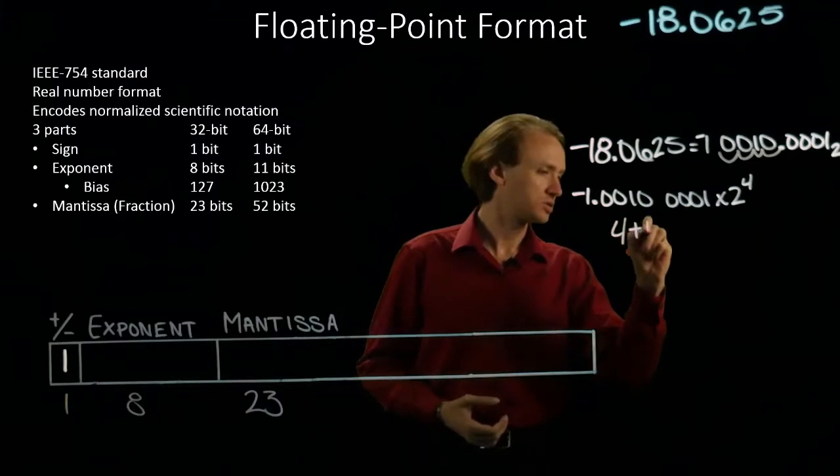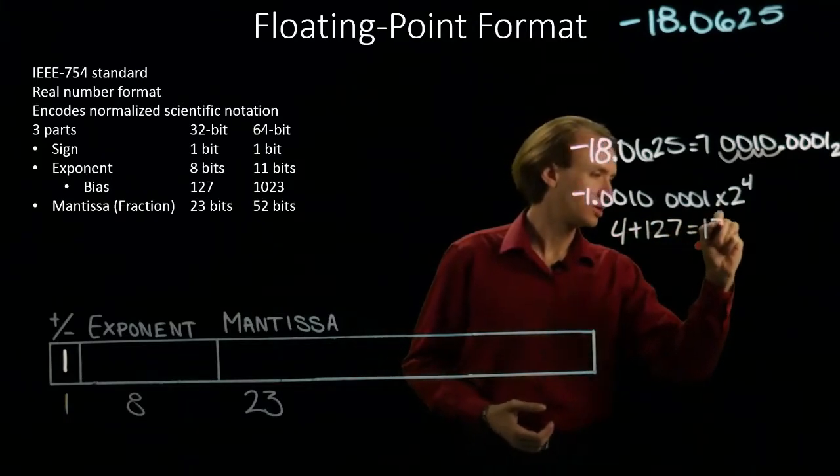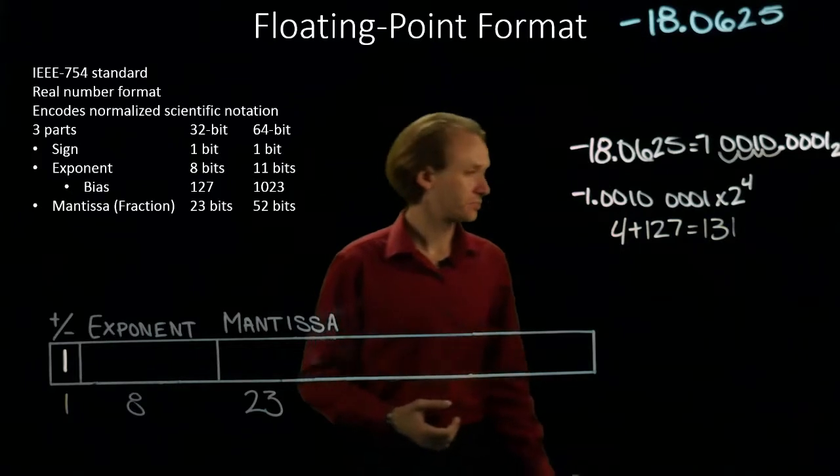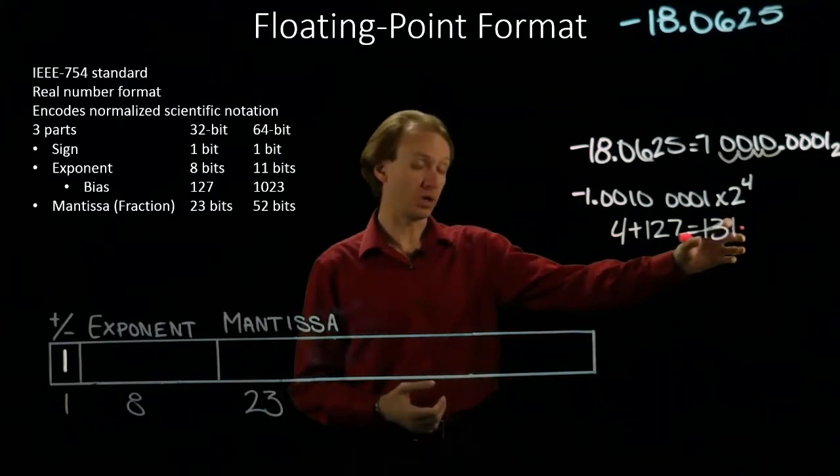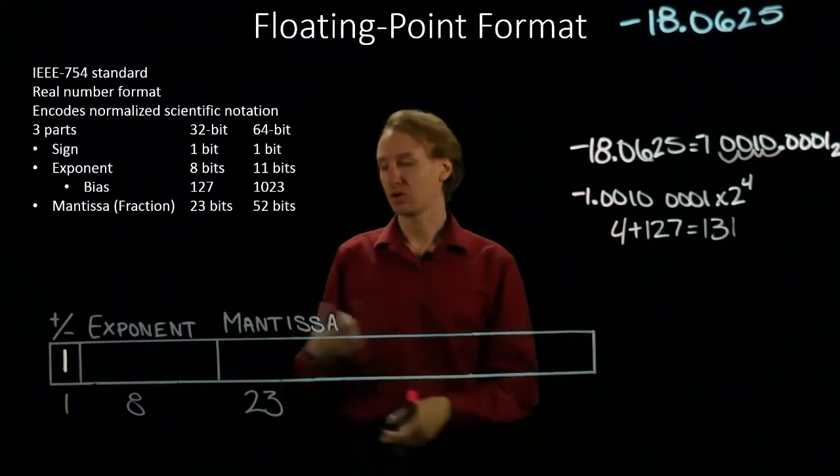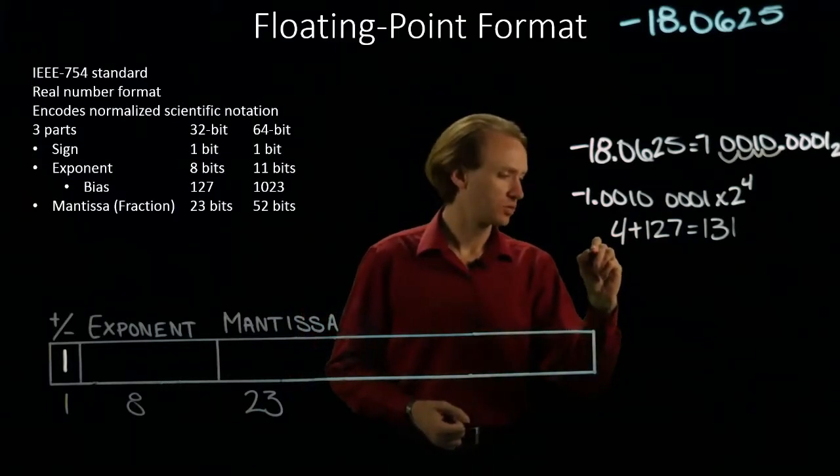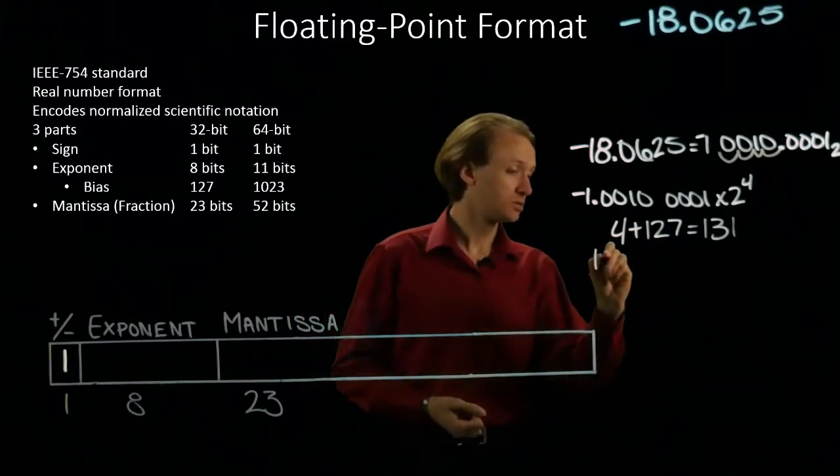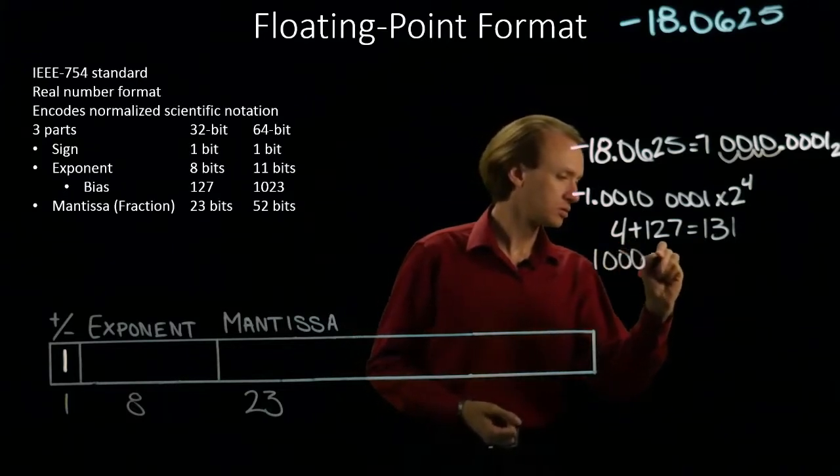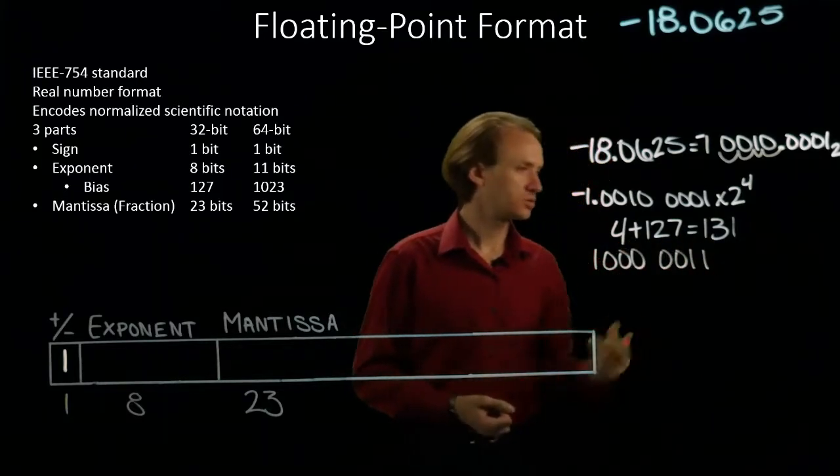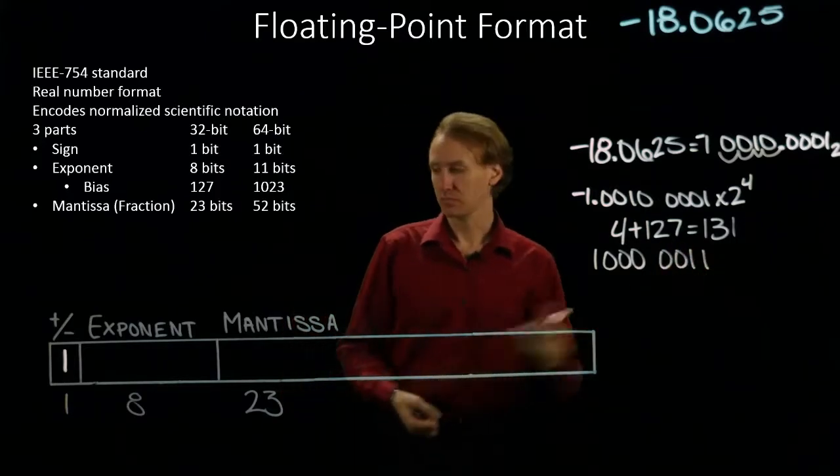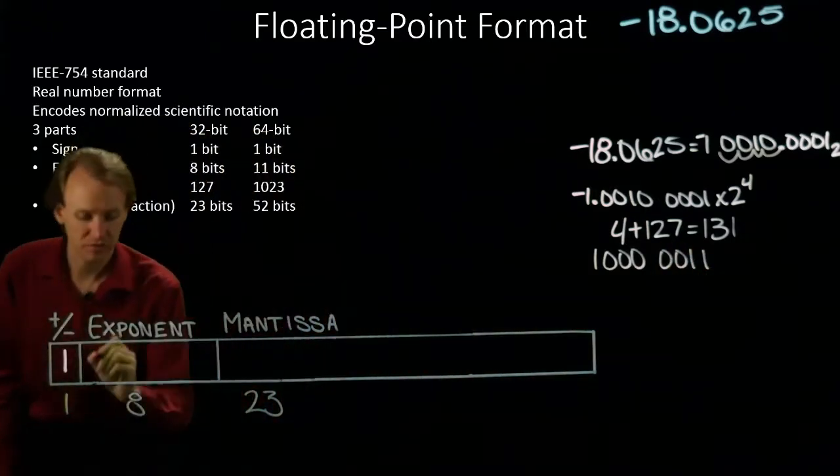4 plus 127 is 131. So I want to convert that 131 into binary so I can put it in my exponent field. That will be 128 plus 3. So there's 131. I will copy that into my exponent field.